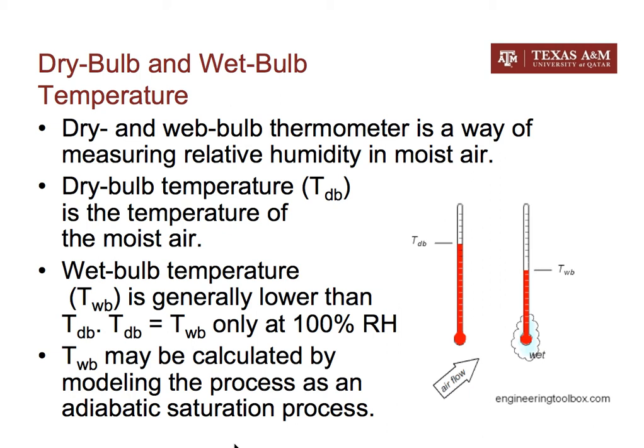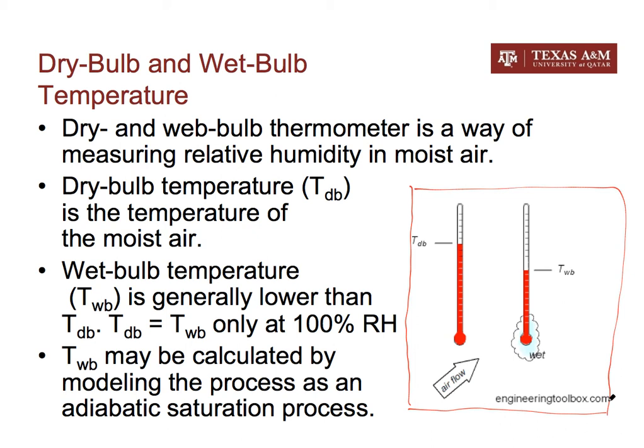Before electronic devices for humidity measurement became widely used, people used to use — and still do — dry bulb and wet bulb thermometers for measuring the humidity of air. On this slide we see an illustration from the website engineeringtoolbox.com, showing the dry bulb and wet bulb thermometer.